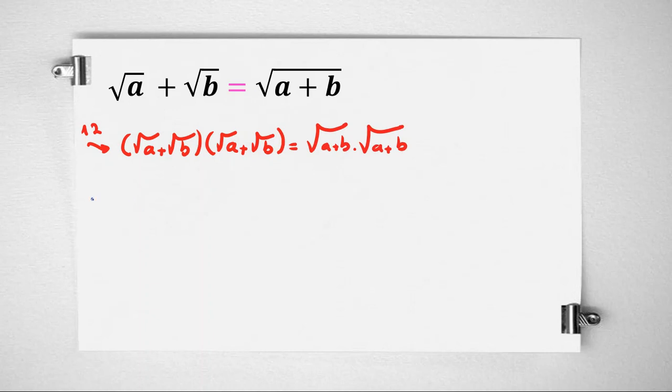And then, left side: square root of a times square root of a is a, square root of b times square root of b is b, and the cross terms give us 2 square root of ab. The right side will be a plus b.